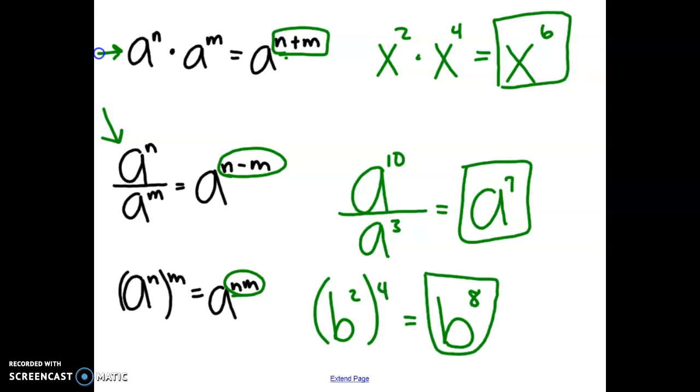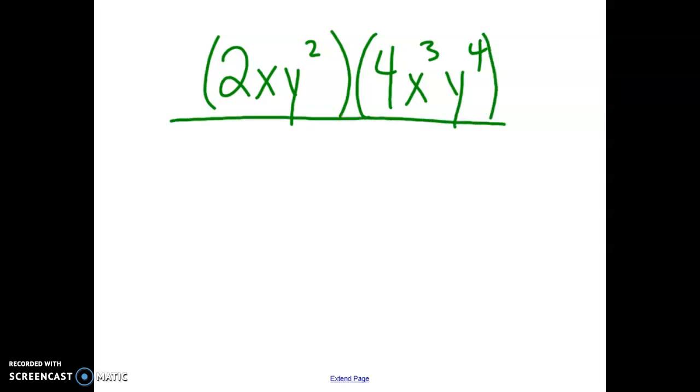So let's look at an example that's a little bit harder, one that maybe encompasses a few of these properties. So if we have 2xy squared times 4x to the third y to the fourth, and then we're dividing it by 8xy.